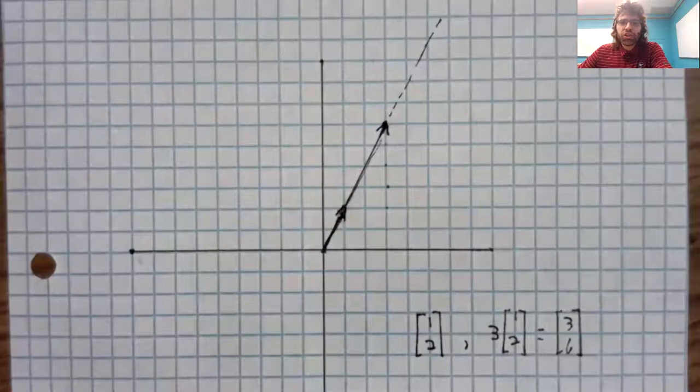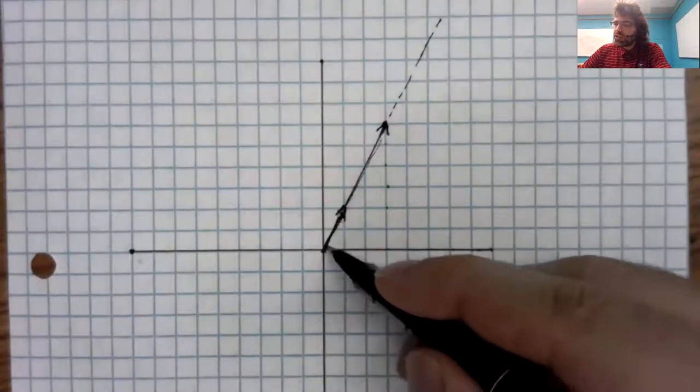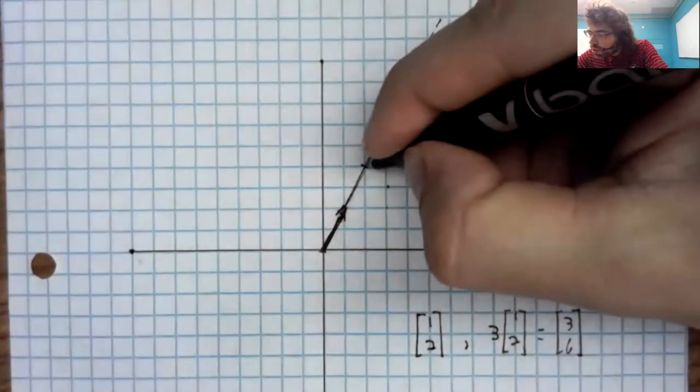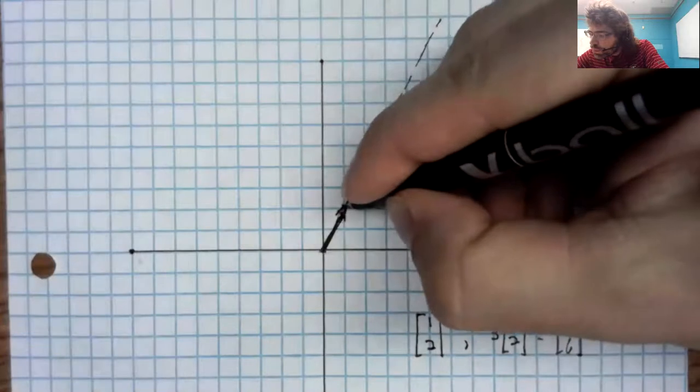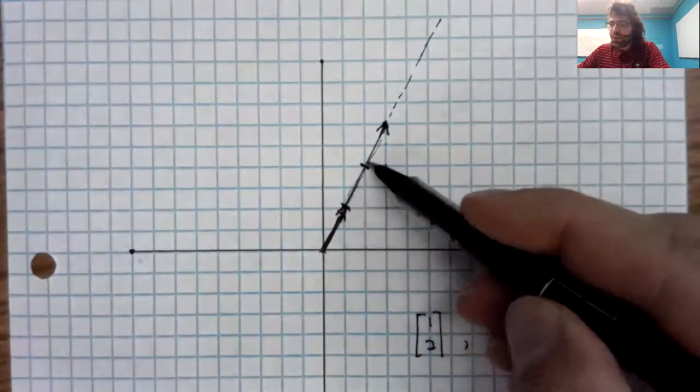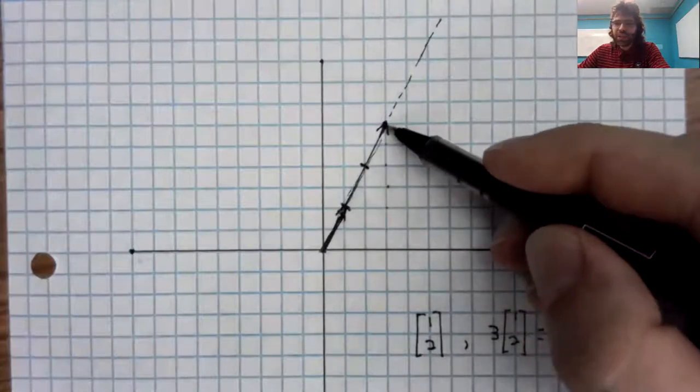What it did do was change its length. And how much did it change its length? Well, this is the length of [1,2]. This is also the length of [1,2]. This is also the length of [1,2]. So is this.